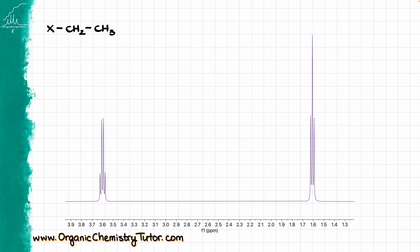In the case of the ethyl group, you're going to see two signals. We are going to have a quartet, which is responsible for two hydrogens, and we're going to see a triplet, which is responsible for three hydrogens. If we assign my groups as A and B, the hydrogens A are my two hydrogens giving a quartet, and the hydrogens B are my three hydrogens giving a triplet. You have probably seen this one already a million times, so let's move to the next one.